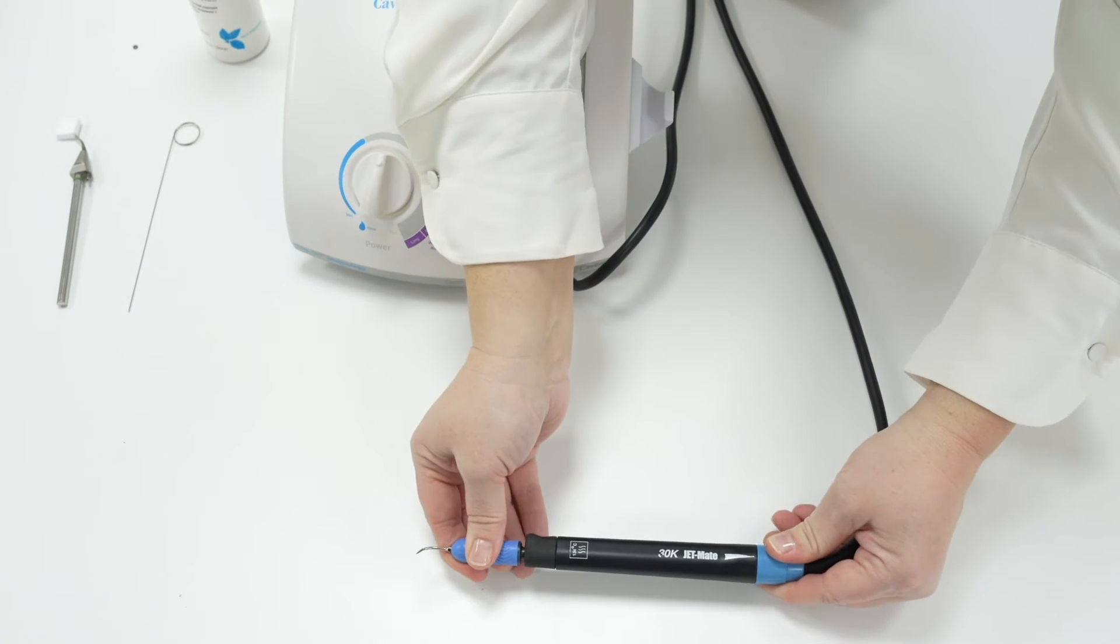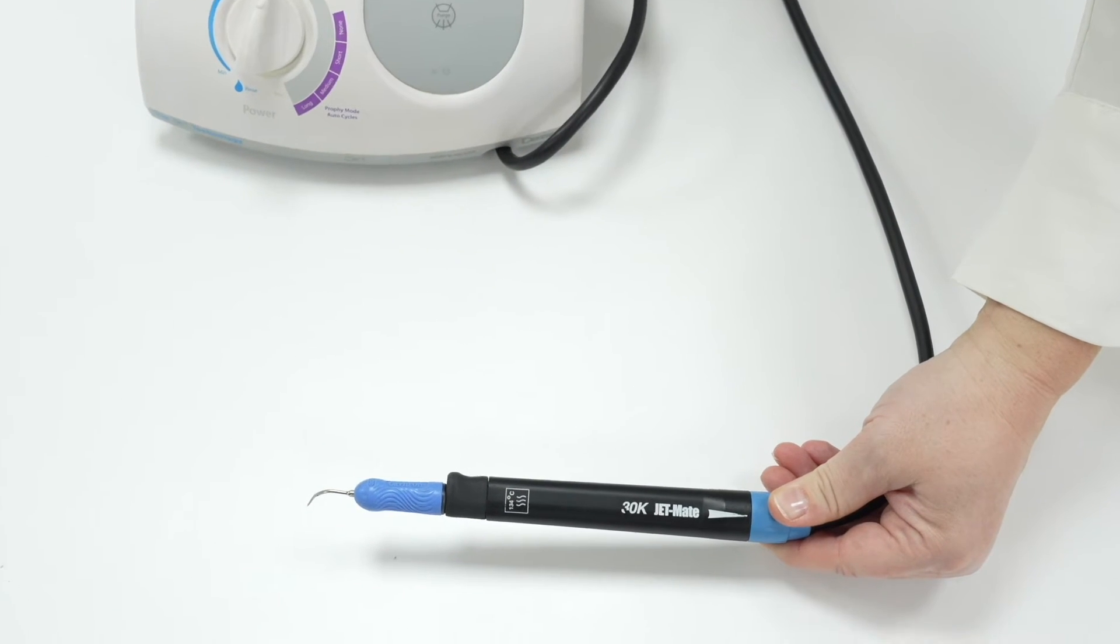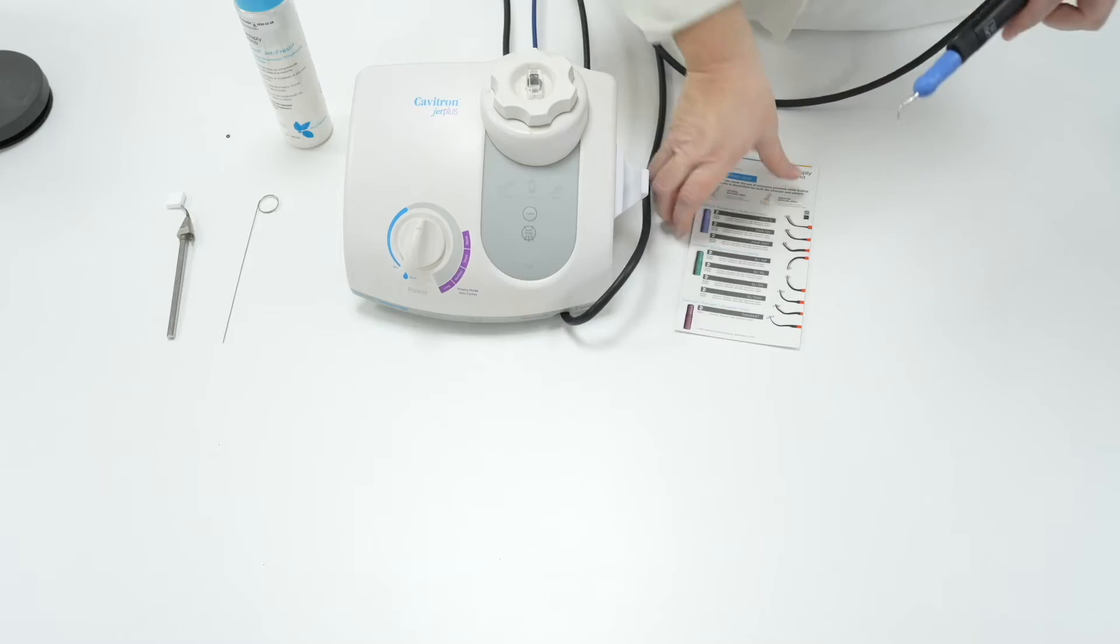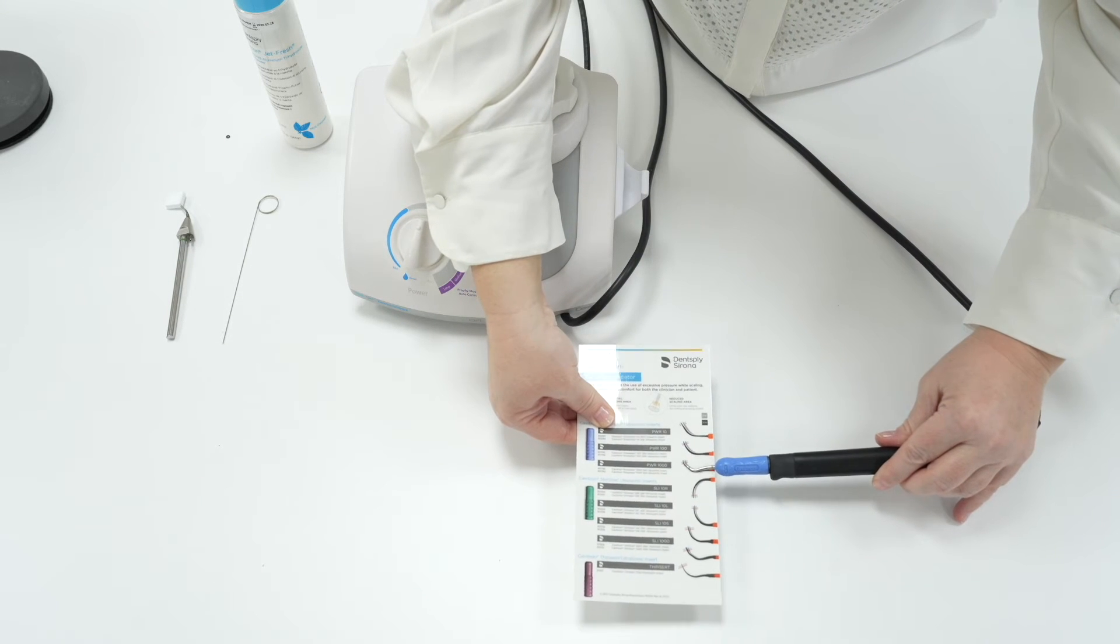The insert should be nice and straight and dropping clear of the sides of the JetMate. You should not have to push the insert in. Please measure your inserts before use to make sure they are within length tolerances to be effective and work effectively.